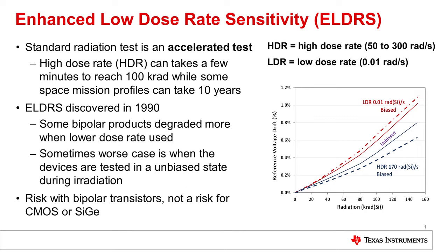Components with bipolar transistors should be characterized for ELDRS. To do the characterization, some units are irradiated at high dose and others at low dose, and the results are compared. If the drift at low dose is more than the high dose, the part is said to have ELDRS, and the radiation lot acceptance test — RLAT testing — must be done at low dose rate.